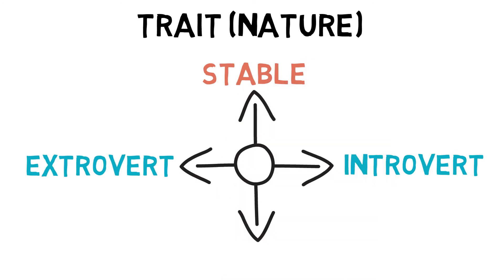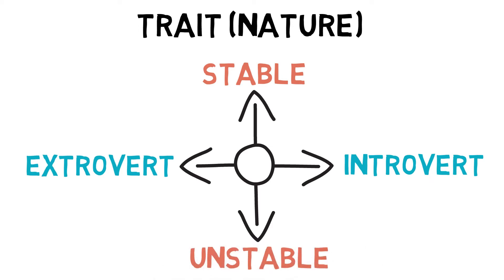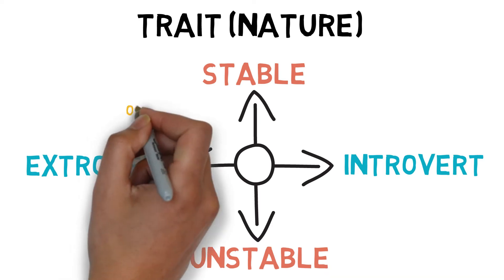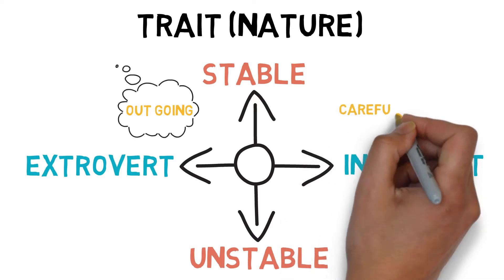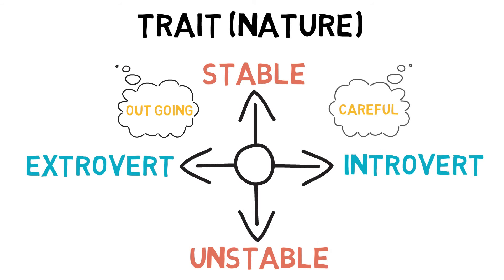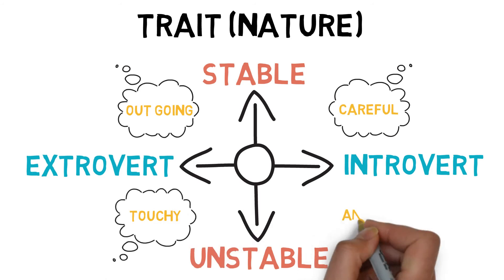Stable refers to unchanging behavioral patterns, and unstable refers to unpredictable behavioral changes. Therefore, a stable extrovert would be outgoing and carefree. A stable introvert would be careful and reliable. An unstable extrovert would be restless and touchy. And an unstable introvert would be anxious and pessimistic.